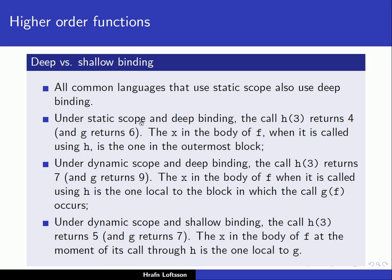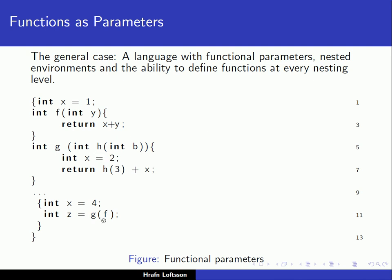So if we look at this example under static scope and deep binding: when we call h of 3, g has its own local variable x with value 2, and we call function h which is actually function f. We do f of 3. y is the formal parameter so y has value 3, and we return x plus 3. What is x? x is 1. We are in static scope using deep binding, so we get the value 4. h of 3 returns 4, then we add x — the local x inside g — so we get 4 plus 2, which equals 6.